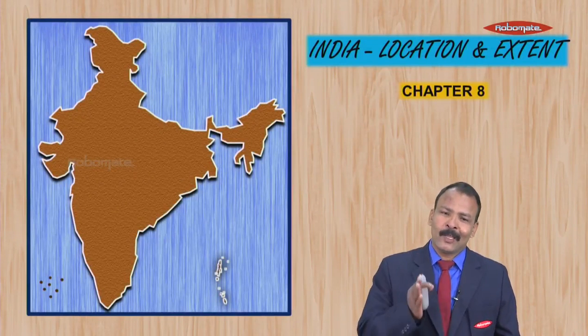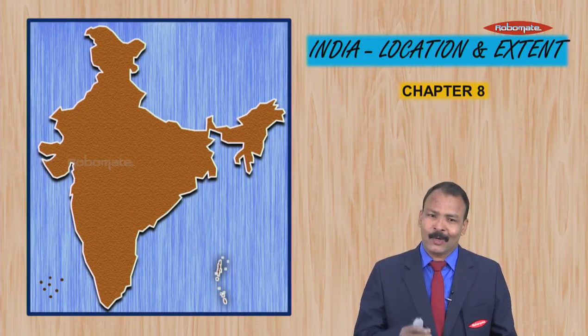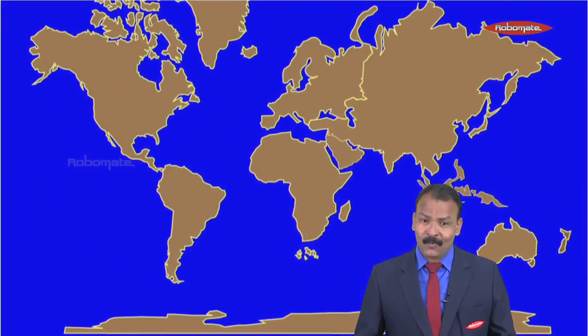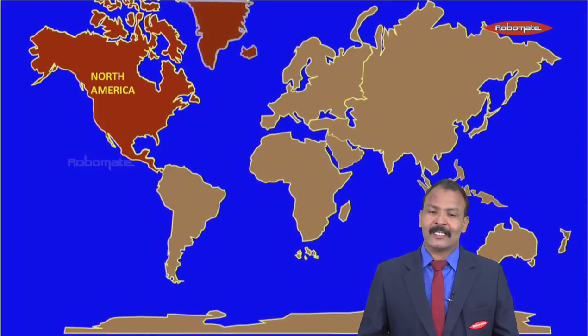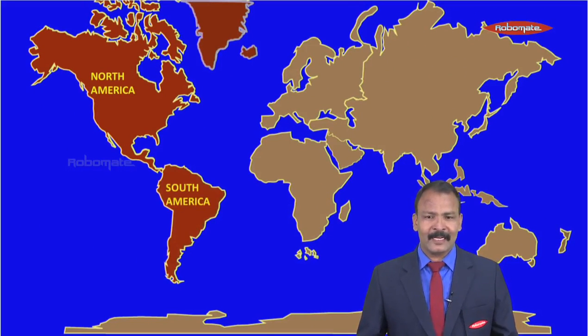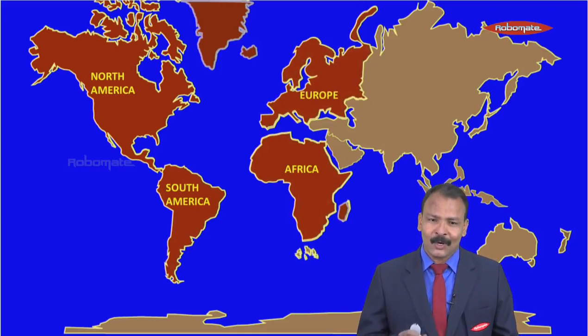Today we will learn the chapter India: Location and Extent. But before understanding this chapter, let us understand the world. The world is made up of continents and oceans. The continents are North America, South America, Africa, Europe,